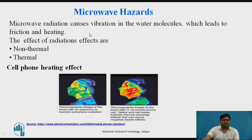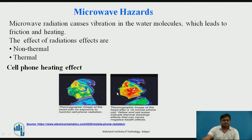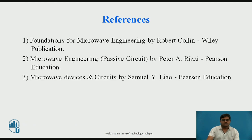Regarding microwave hazards, microwaves affect the body in two ways: non-thermal and thermal. Non-thermal effects are difficult to detect, but thermal effects can be observed through cell phone radiation. A thermographic image without a cell phone shows green (cooler areas) and yellow (slightly warmer). After 15 minutes of talking on a cell phone, the image turns red, showing significant heating. This demonstrates a detrimental effect on health. These are the references. Thank you.